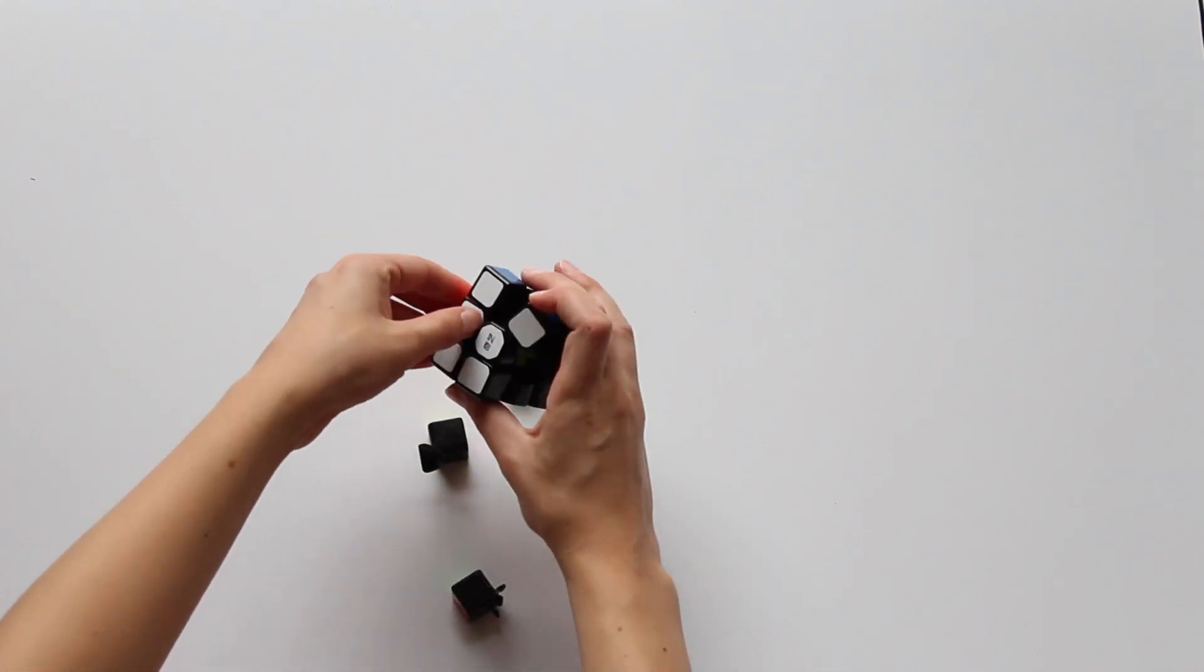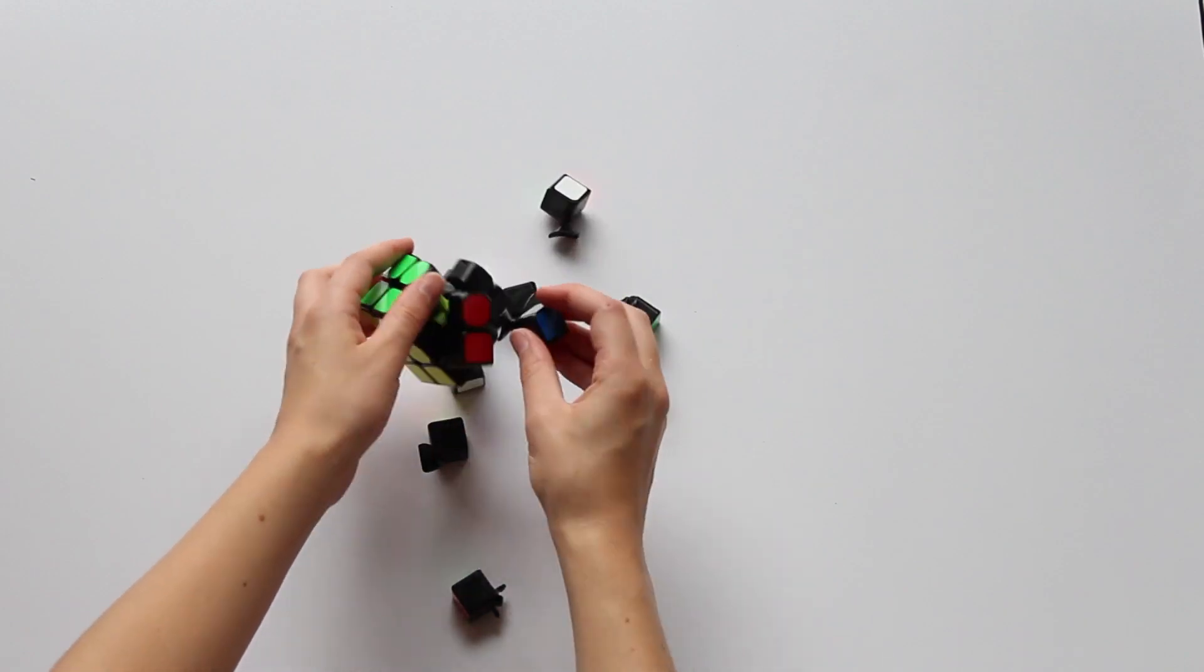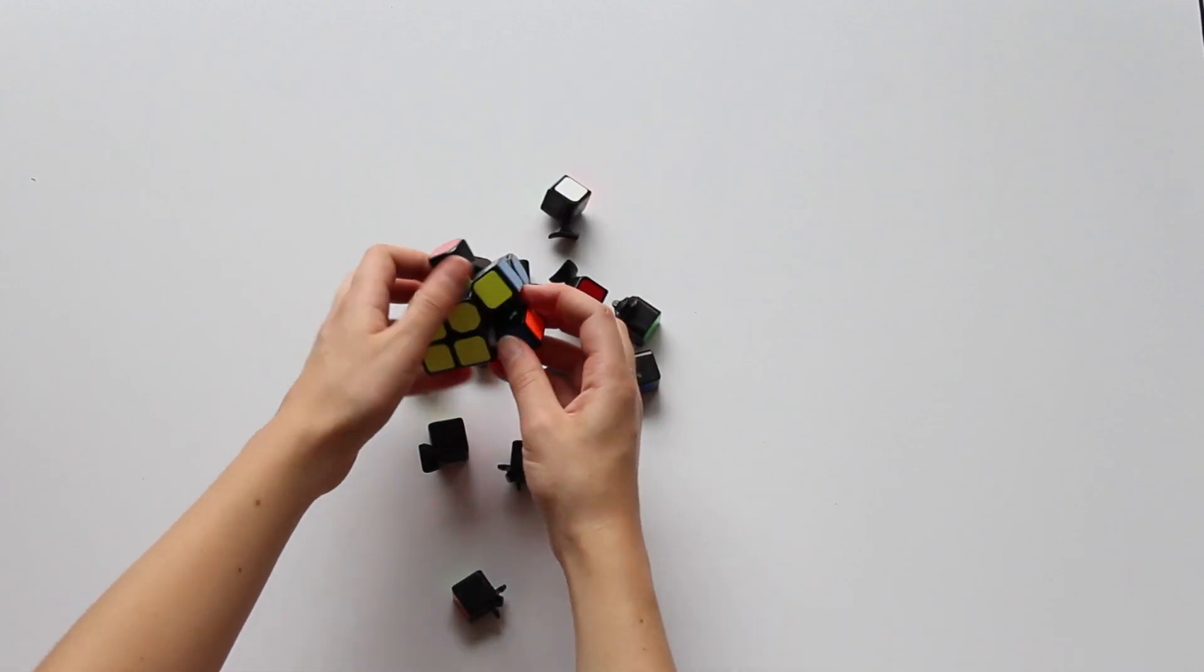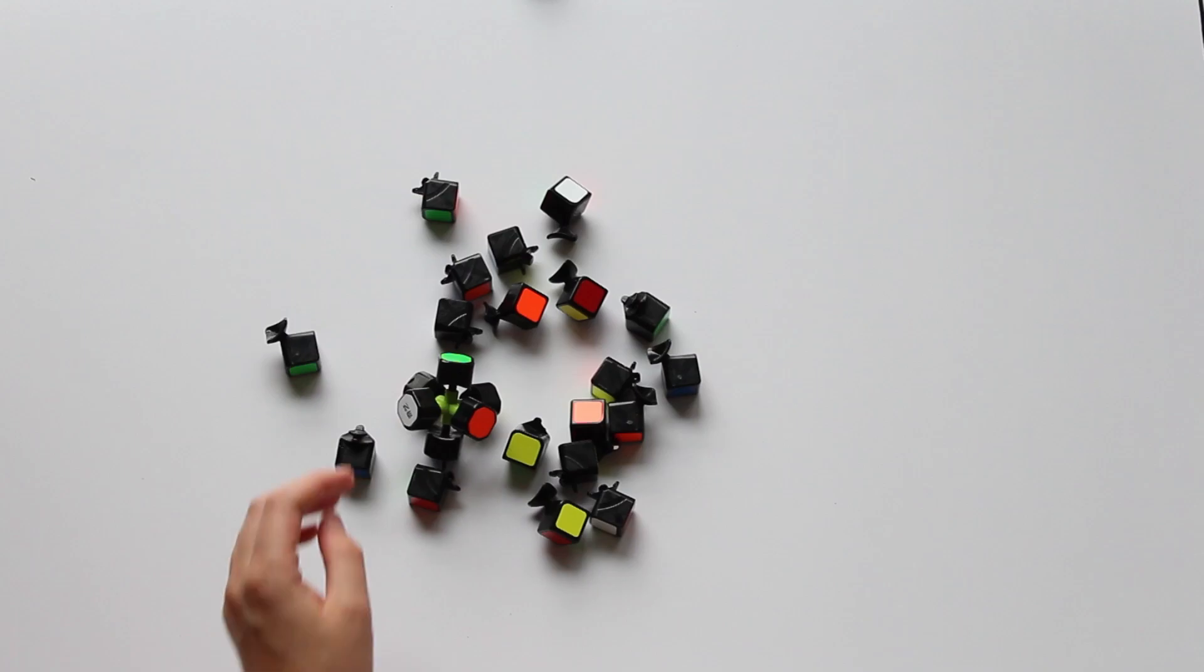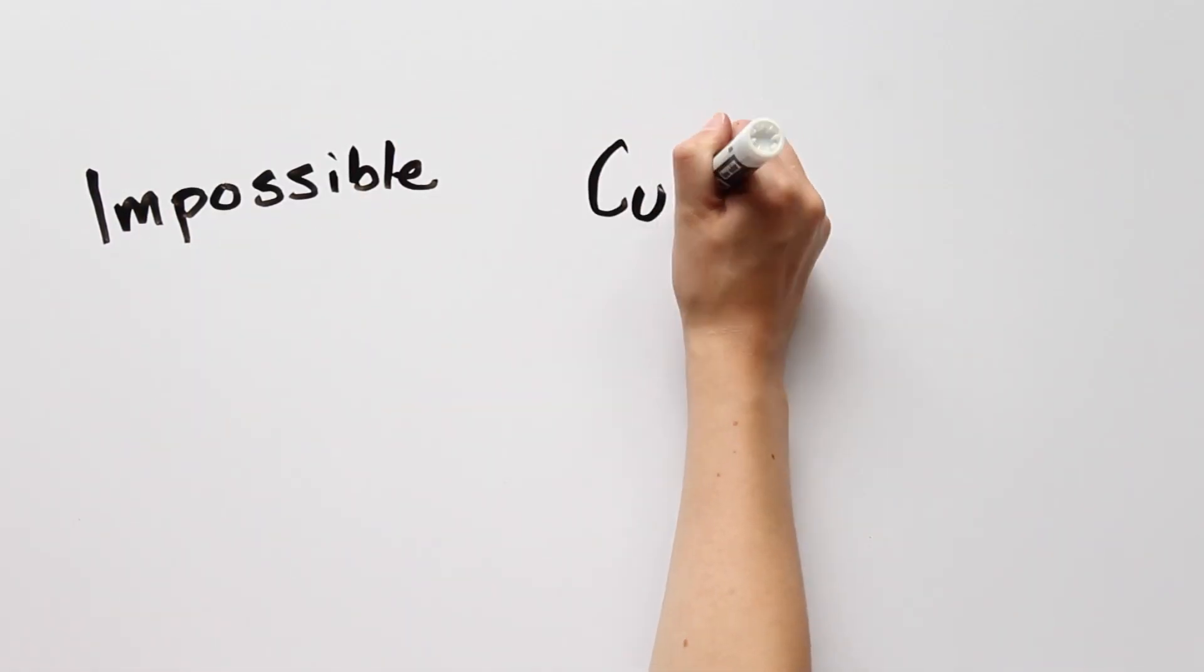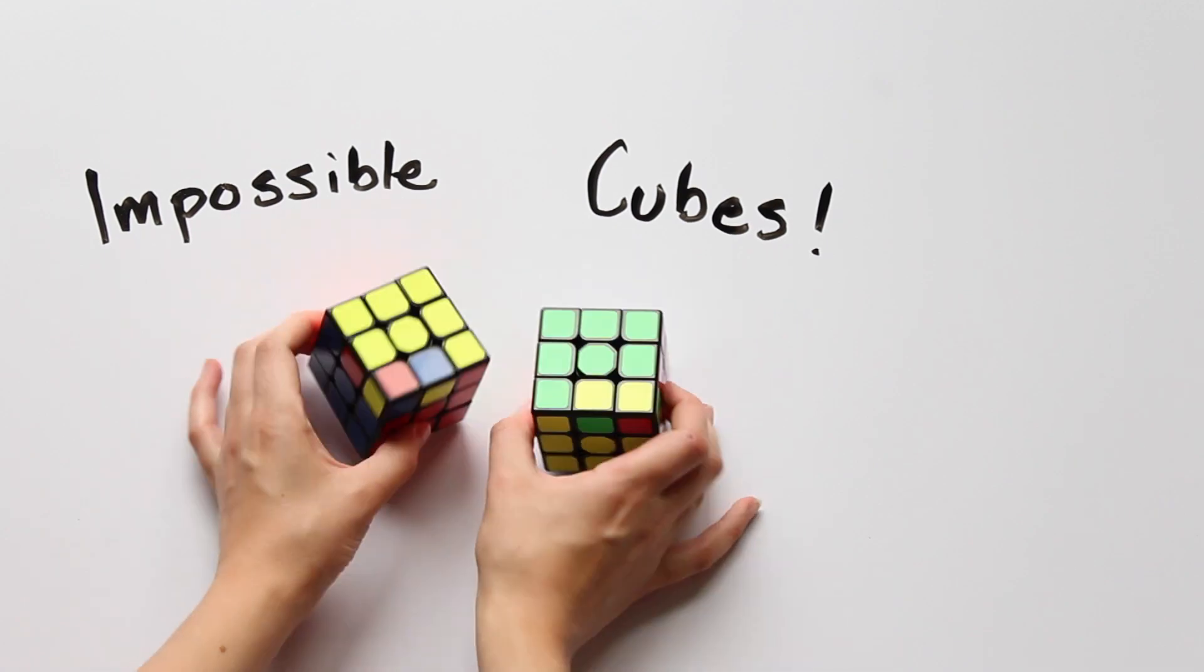A Rubik's Cube arrangement is anything we can get from taking apart the pieces of a Rubik's Cube and putting them back together. An impossible arrangement is any arrangement that we cannot reach from the solved cube using legal cube moves.